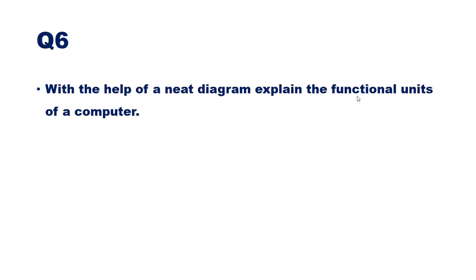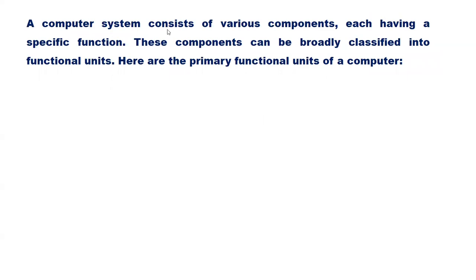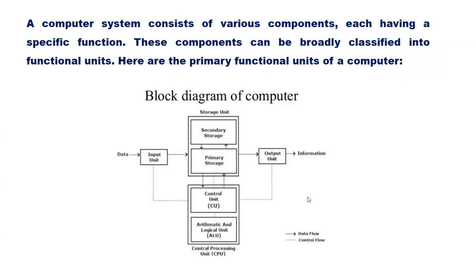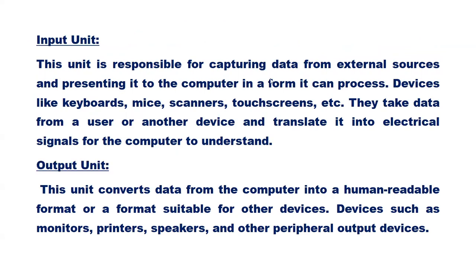Question 6: With the help of a diagram, explain the functional units of a computer. A computer system consists of various components, each having a specific function, broadly classified into functional units: the input unit, storage unit, CPU, and output unit. The input unit captures data from external sources and presents it to the computer in a processable form. Devices like keyboards, mice, scanners, and touchscreens are part of the input unit; they translate user input into electrical signals for the computer to understand.